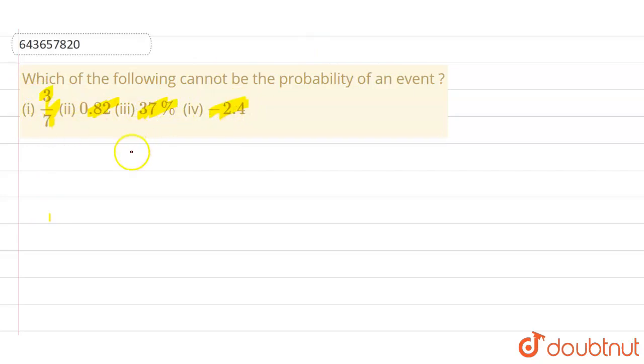So we know that probability for any event always lies between 0 and 1.